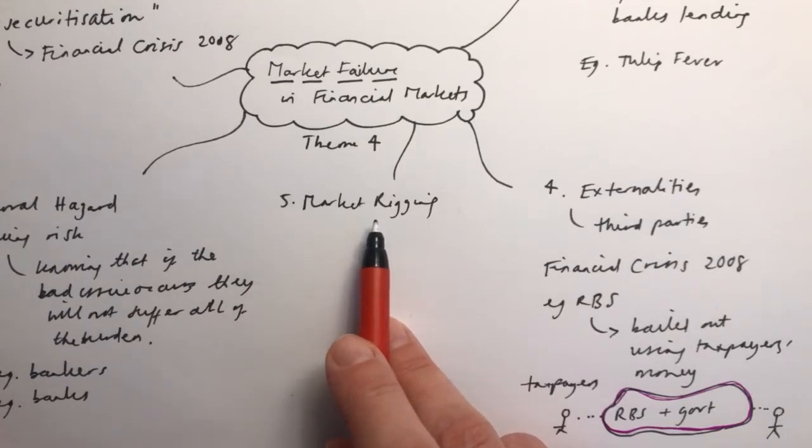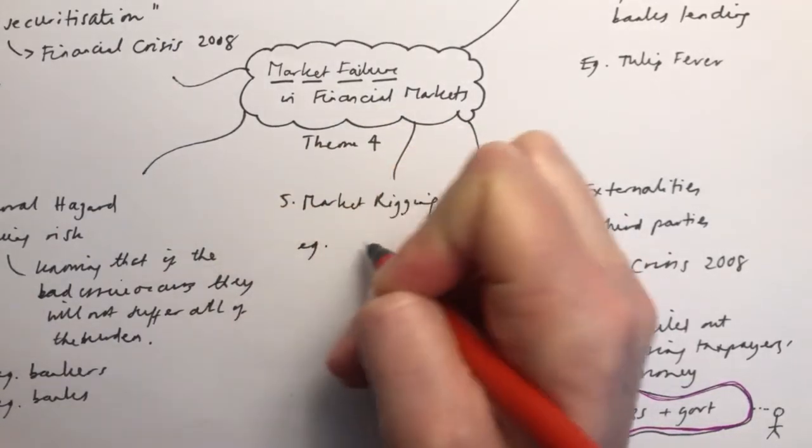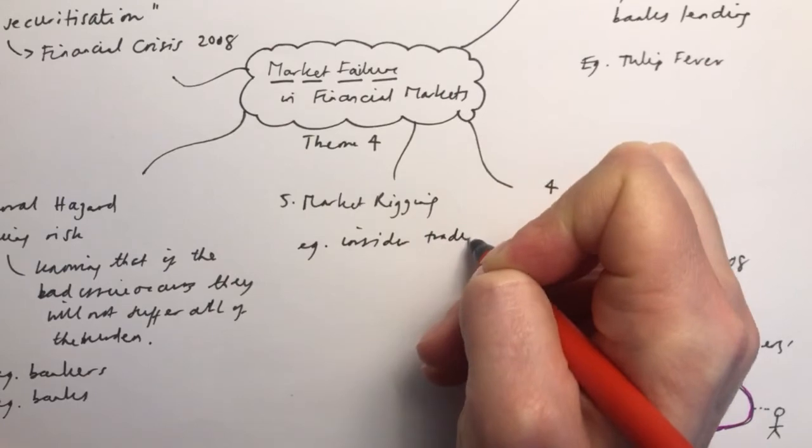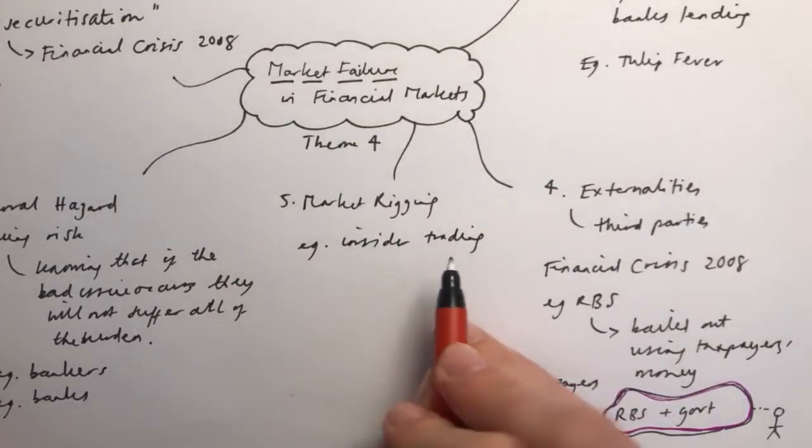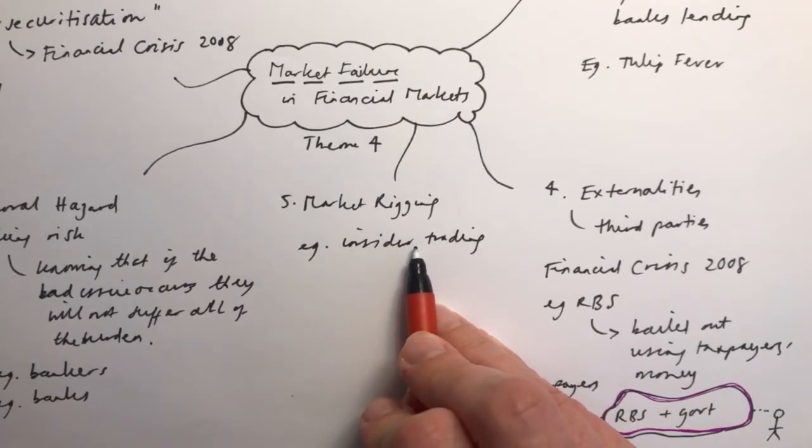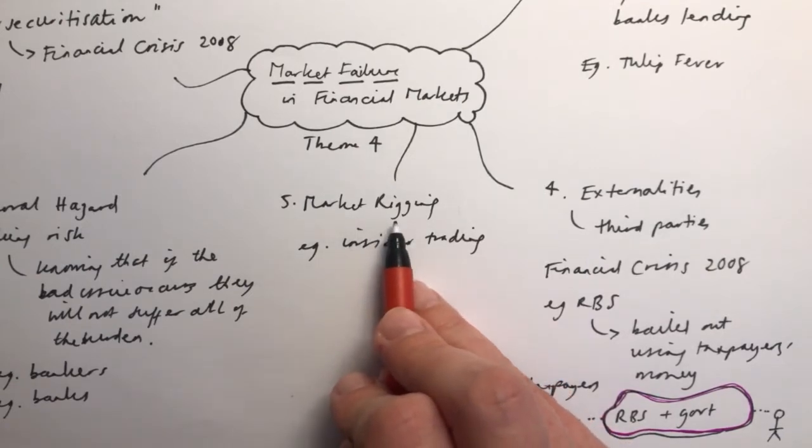An example of this would be if you have insider trading. This means that somebody working within a business, or somebody who knows about what's going on within a business, they might for example buy up shares in that business, knowing that something is about to happen which is going to cause the share price to increase. They've taken advantage of their knowledge, and this is considered to be market rigging.